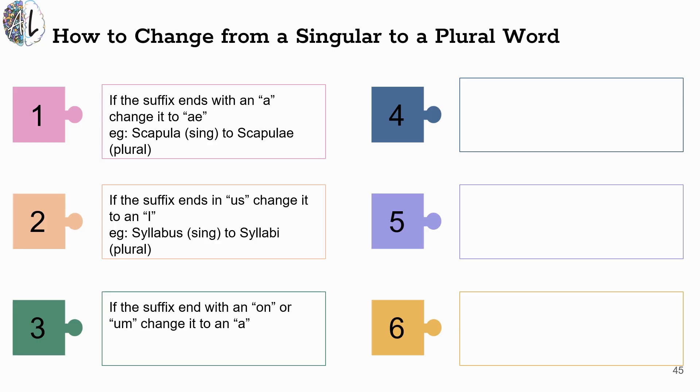If a suffix ends with an ON or a UM, you are going to change to a letter A. So the word pericardium ends in the UM and that would be singular. Pericardia, by changing the UM to the A, would make it plural and refer to multiple.